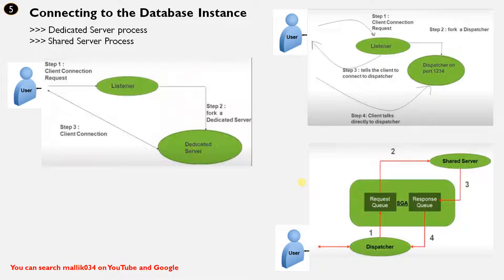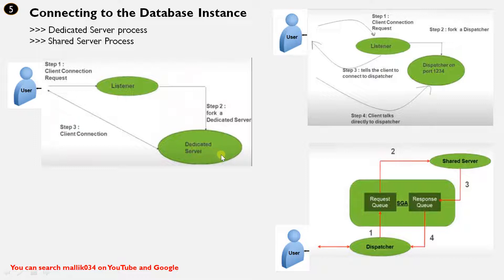If you see here in the dedicated server process, the client tries to connect to the database with the help of a connection string — the TNS connection string. The request goes to the listener, defined in listener.ora, where you define your listener parameters and start your listener to listen for incoming connections. The connection goes to the listener, and then the listener connects to your dedicated server process, which is assigned to that user. Once that connection is established between the client and the dedicated server, whatever request the client sends, the dedicated server process will process it and return the data back to the user.